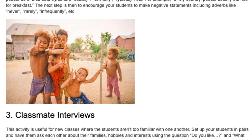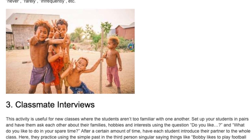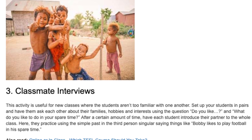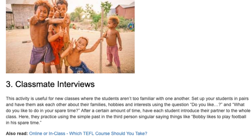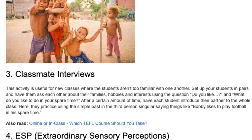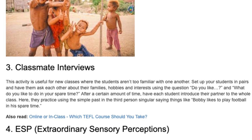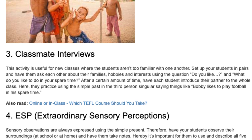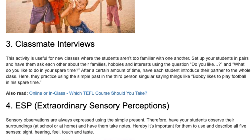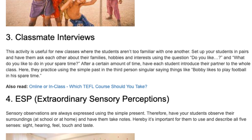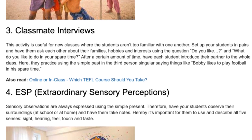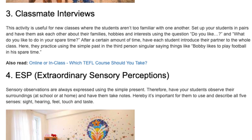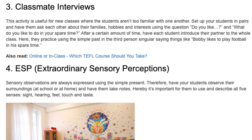Activity 3: Classmate Interviews. This activity is useful for new classes where the students aren't too familiar with one another. Set up your students in pairs and have them ask each other about their families, hobbies and interests using questions like 'Do you like...' and 'What do you like to do in your spare time?' After a certain amount of time, have each student introduce their partner to the whole class, practicing the simple present in the third person singular — saying things like 'Bobby likes to play football in his spare time.'